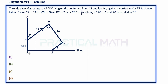The side view of a sculpture. Points A, B, C, D, E is lying on the horizontal floor AB and leaning against the vertical wall AEF. Given that DE is 17, CD is 20, BC is 2 meters, angle EDC is pi over 2 radians, and angle DEF is theta.